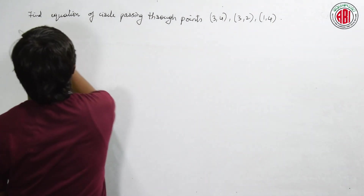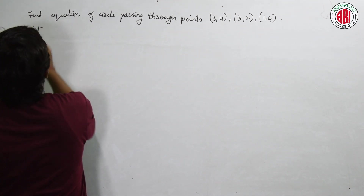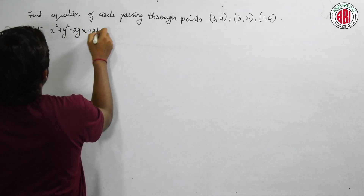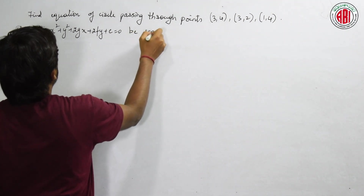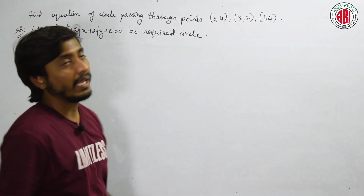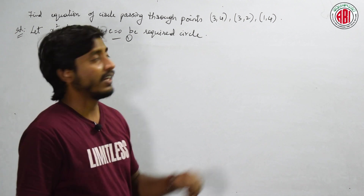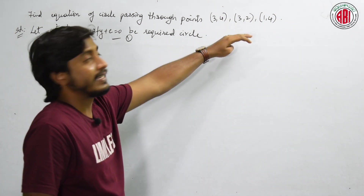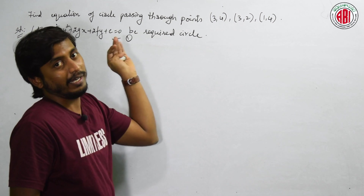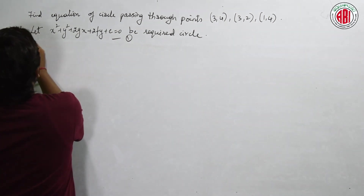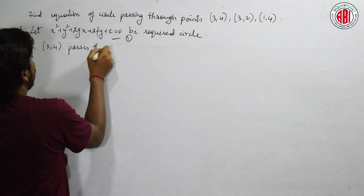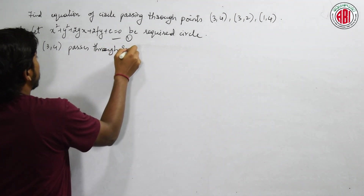The first thing we have to do is, we have to assume an equation: x squared plus y squared plus 2gx plus 2fy plus c equal to 0, to be the required circle. Let us say this as equation 1. He gave three points and is telling that these three points pass through this equation. So first, substitute the first point. Given 3 comma 4 passes through equation 1.